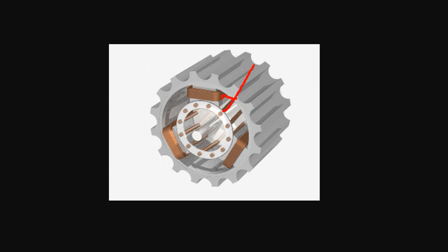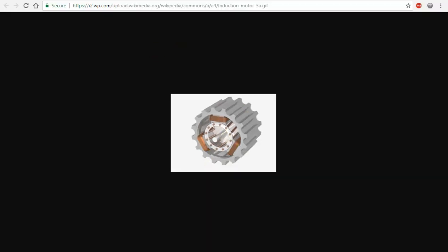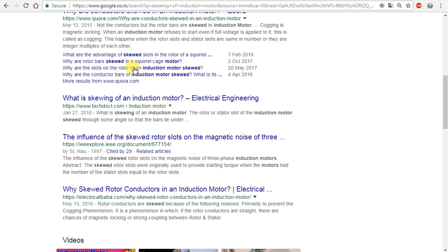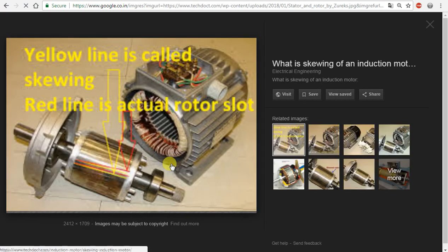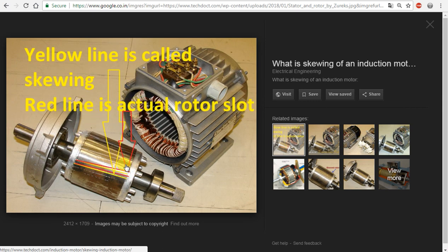If you want to make a rotation, we want to make an angle. So if you want to see the real photo — this is the real photo. I marked the yellow line, which is actually skewing. The red line is the original line, and the yellow line is the skew. This is what we want to make in a rotor. But if you want to make a coil, then you want to make a straight stator.